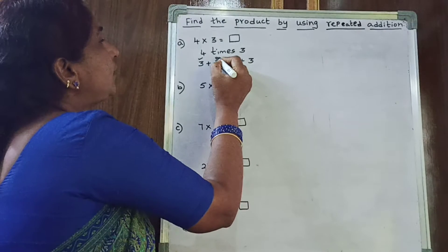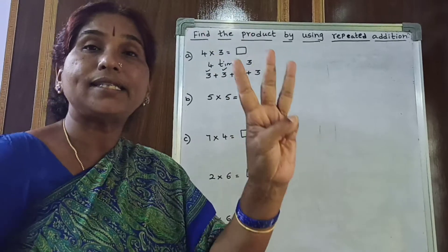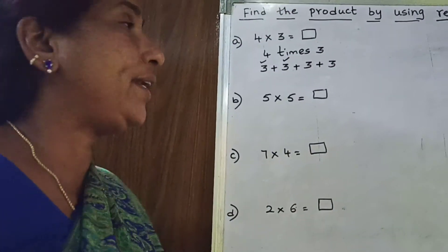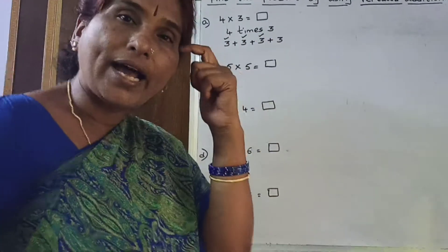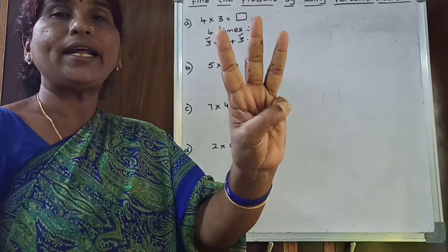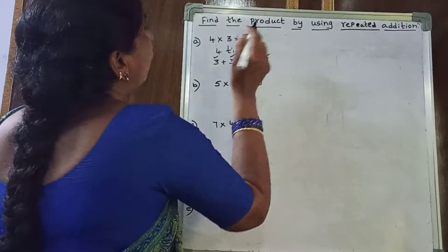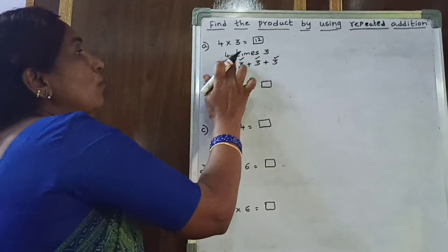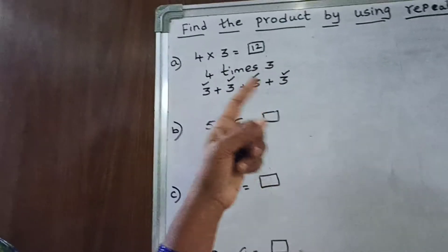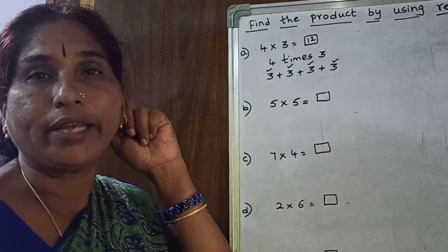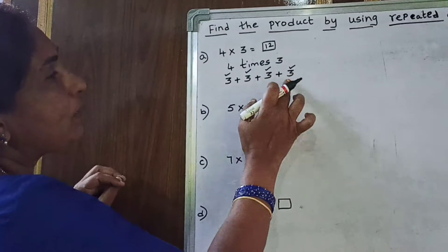So 3 completed, 3 plus 3 is 6. This 3 also completed. Then 6 in mind, 3 in hand, 6 after: 7, 8, 9. This 3 also counted — 9. Again, 9 in mind, 3 in hand, 9 after: 10, 11, 12. So 4 threes are 12, or 4 times 3 is also 12. This is repeated addition — you go on adding and you get the answer.